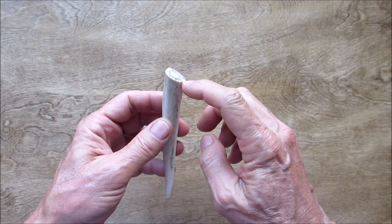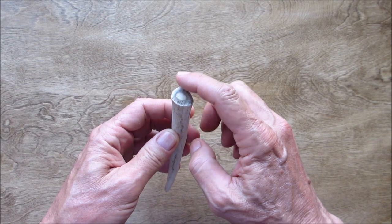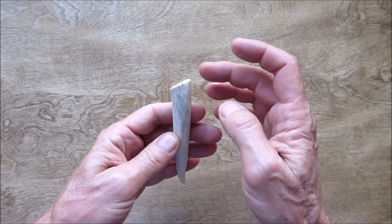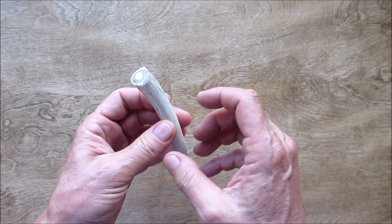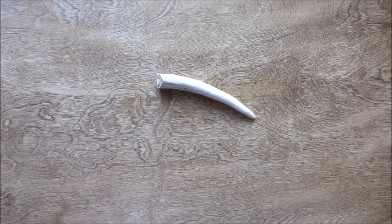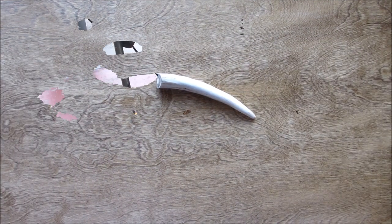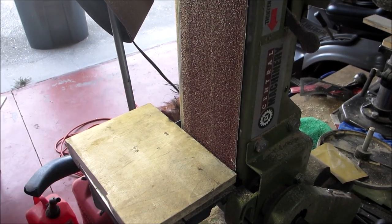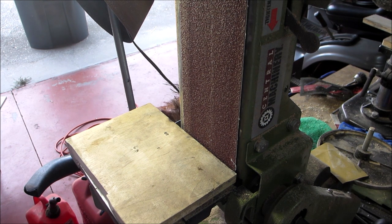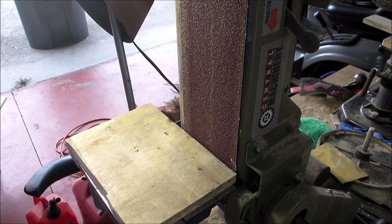The next thing we're going to do is grind this down so we have a nice flat surface. I'll bring you over to the grinder and show you how I do that. All right, so I'm over at my belt sander. Make sure you wear a dust mask when you do this.